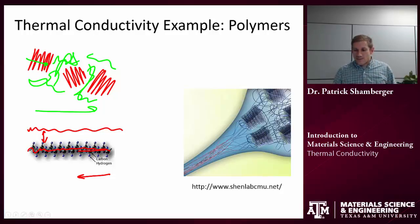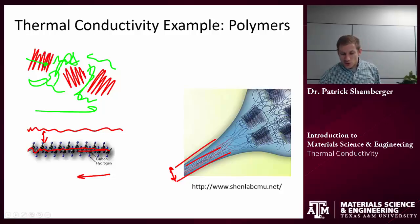And so there was a group that tried this. They took a polymer and they drew it out to very, very thin, so nanoscale threads essentially, of these polymers. And by doing that, they were able to align a lot of the polymer chains along the length of that fiber.